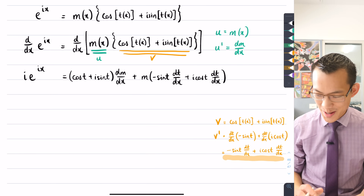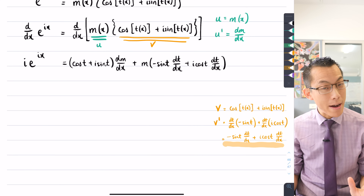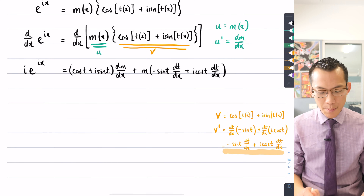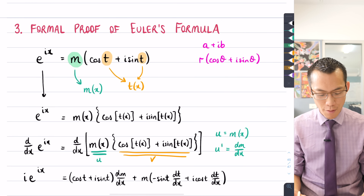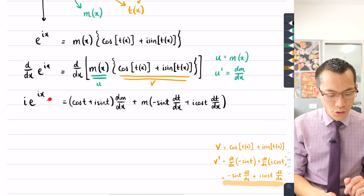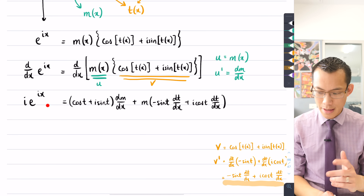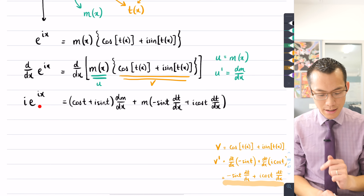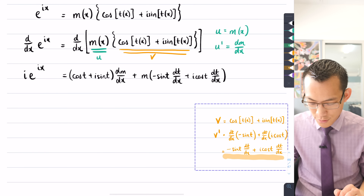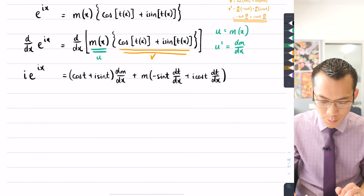All the differentiating has been done on the right-hand side. Similar to the informal proof, there are real and imaginary parts tucked away here, which can also be identified from how this function was defined at the outset. Because it's such a mess, I'll file that away over here just in case we need to refer to it again.